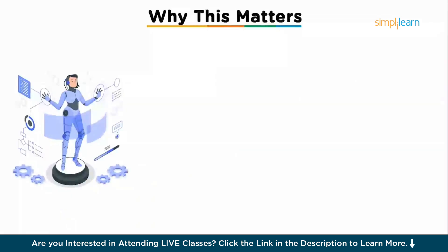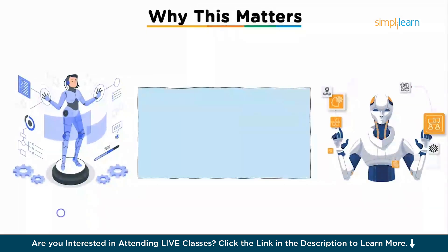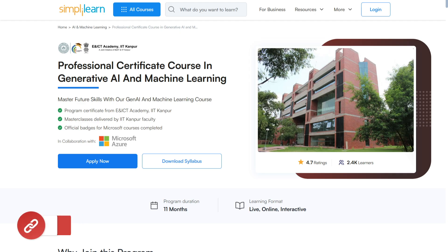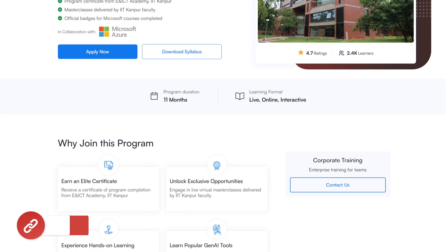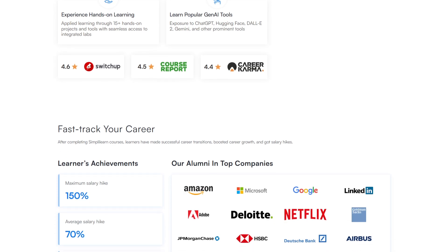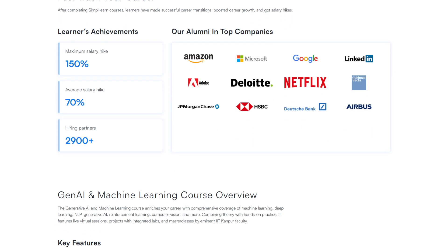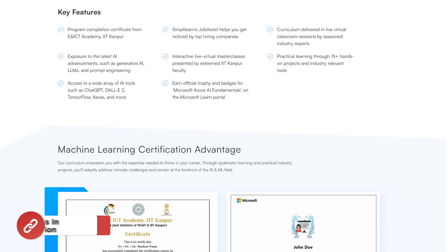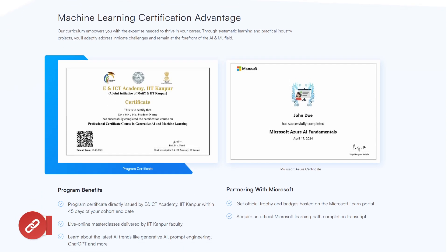Understanding the difference between generating and acting helps you choose the right AI tools, spot opportunities for your career or business, and navigate ethical implications — like who's responsible if an AI makes a mistake. Whether you're a techie, a marketer or a curious learner, knowing how these AIs work can future-proof your skills. If you're interested in mastering these technologies, check out the Professional Certificate course in Generative AI and Machine Learning — an 11-month live interactive program covering generative AI, machine learning, ChatGPT and HuggingFace. The link is in the description.